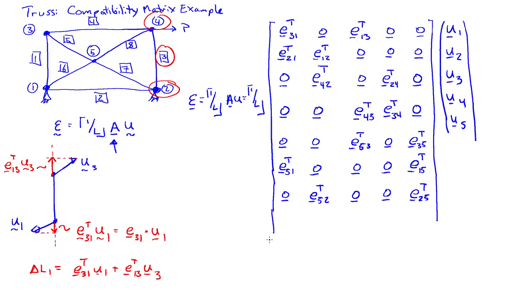And the last bar is bar 8. It connects 4 and 5. So 0, 0, 0. In the fourth column, I'm going to have E54 transpose. And in the fifth column, I'll have E45 transpose.